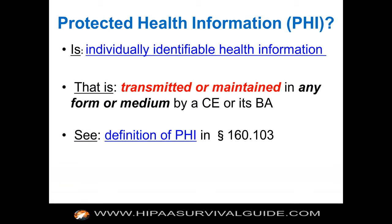Let's get into uses and disclosures of PHI. What is the definition of PHI? It's individually identifiable health information — but that turns out to be a term of art. It needs to be transmitted or maintained in any form or medium, so it need not be electronic. Paper charts qualify as PHI. You can find the definition at 45 CFR 160.103 or on the HIPAA Survival Guide.